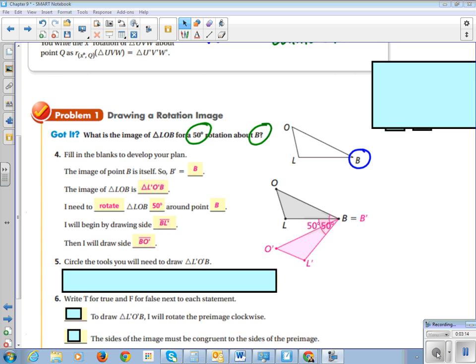Alright, so we're going to circle the tools we will need to draw this triangle. Now, will we need a ruler? Not really. Not if we have a compass. What do we use the compass for?